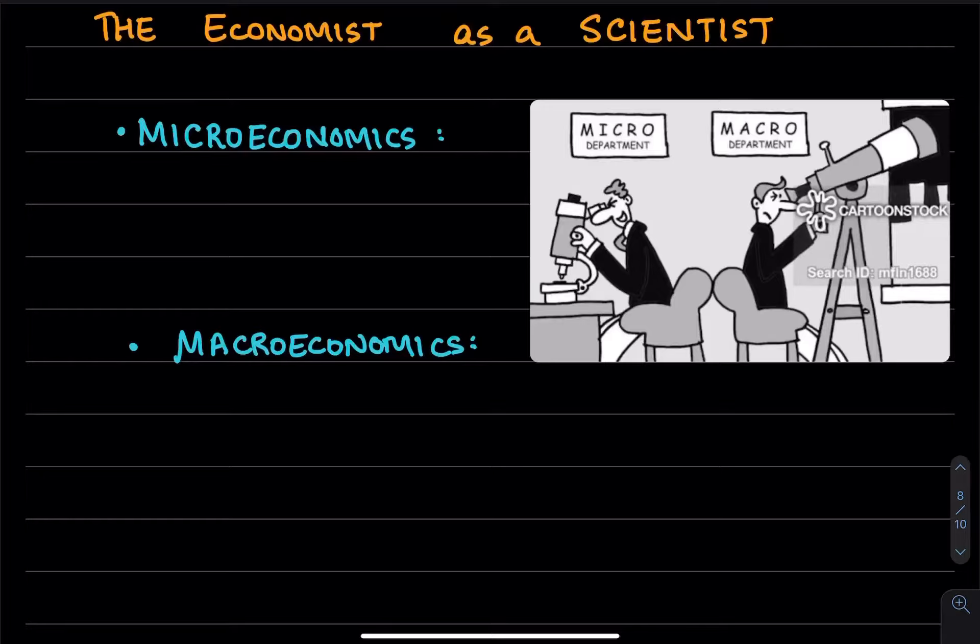One is microeconomics and the other is macroeconomics. If you remember this little cartoon I have on iLearn, it really nicely summarizes what these different types of economists try to do. The field of economics has very different types of microeconomists and different types of macroeconomists that study different phenomena.